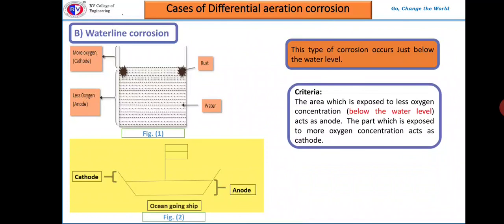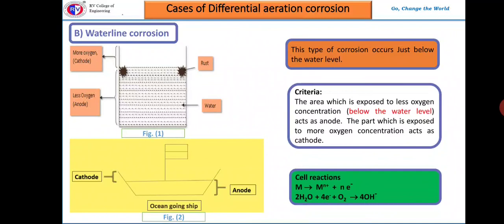The part of the metal having less oxygen concentration acts as the anode, whereas the part above the water level, which is more aerated, acts as the cathode. The corrosion product is found just below the waterline in the form of a brown layer. The metal undergoes oxidation at the anode, and oxygen undergoes reduction at the cathode due to its greater supply.